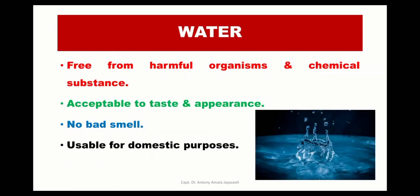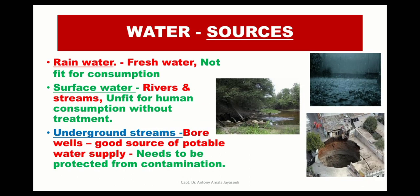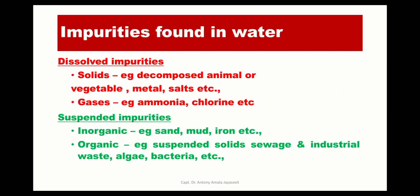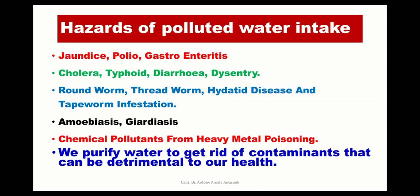Water is an everyday need. It should be free from harmful organisms and chemical substances, and acceptable in taste and appearance. There are different sources of water: rain water, surface water, and underground water. There are impurities found in water, such as dissolved and suspended impurities including various organic and inorganic substances, which may cause diseases in the population like jaundice, polio, gastroenteritis, cholera, and typhoid. Chemical pollutants may cause heavy metal poisoning. Hence, we need to purify water to get rid of contaminants.